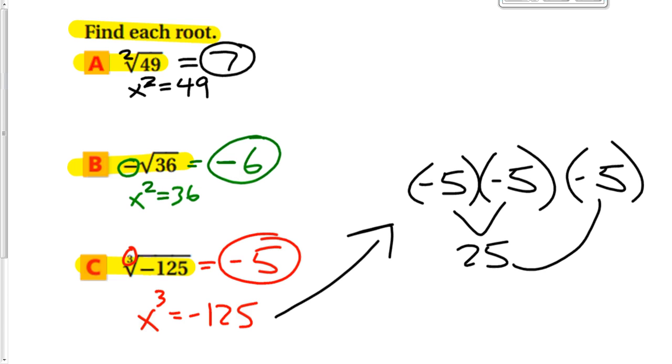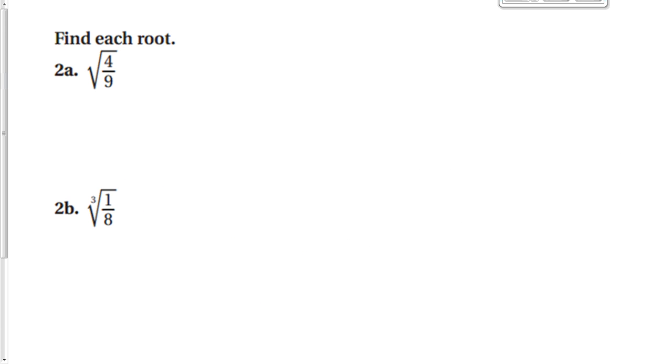And lastly, if you have to square root a fraction, it's very simple. You can actually just take this and split it up into its two parts. Square root of 4 is 2. Square root of 9 is 3. There we go.